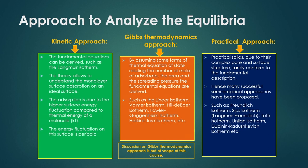In the Gibbs thermodynamic approach, various isotherm forms arise such as linear isotherm, Vollmer isotherm, Healy-Devoyer isotherm, Fowler-Guggenheim isotherm, and Harkins-Jura isotherm. These isotherms are equations derived based on the state of how many molecules are adsorbed on the adsorbent, the surface area condition, and under which pressure the adsorption occurs.